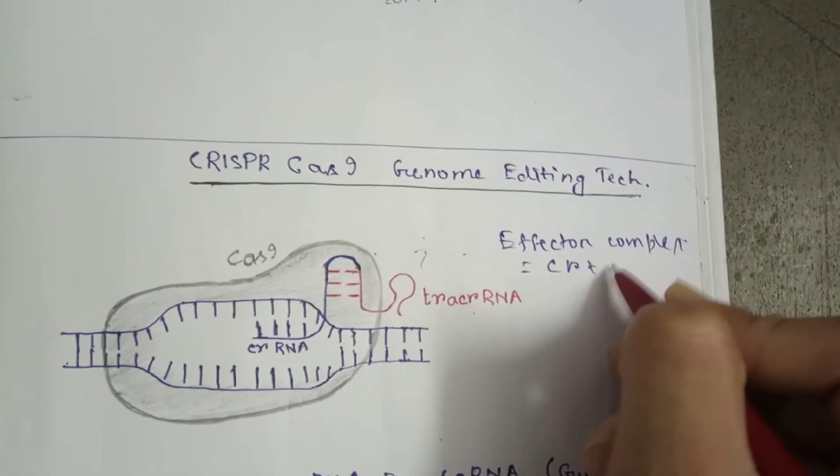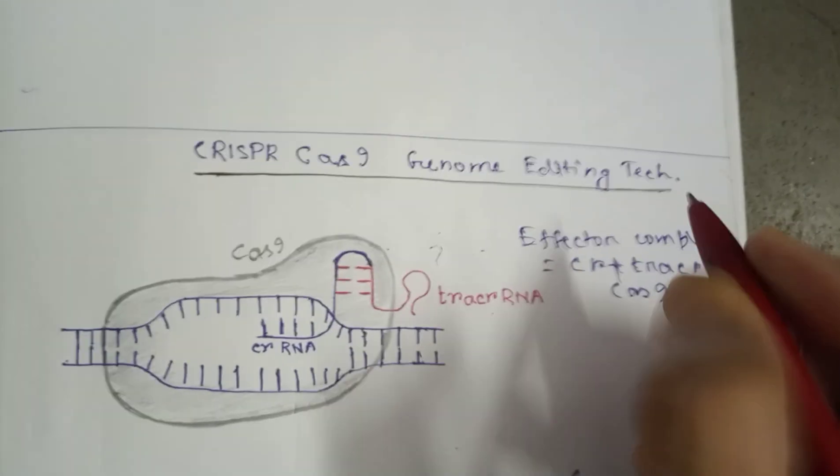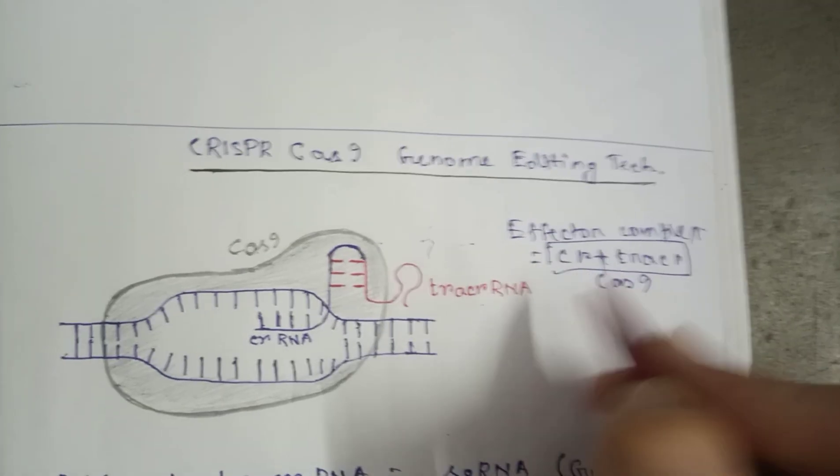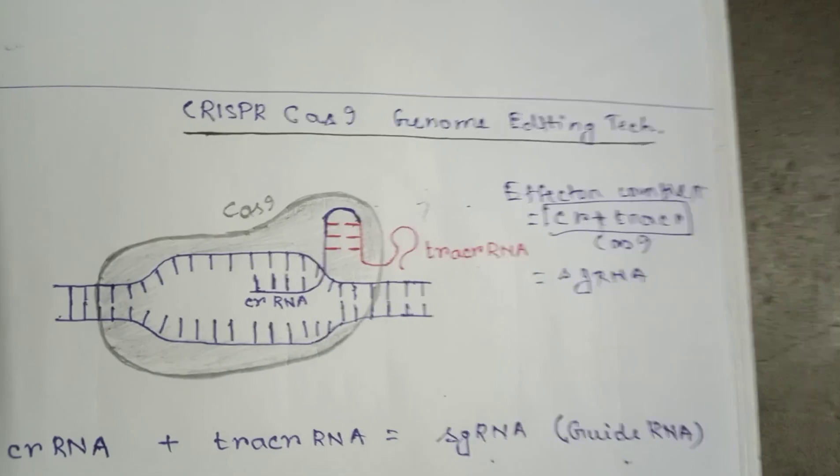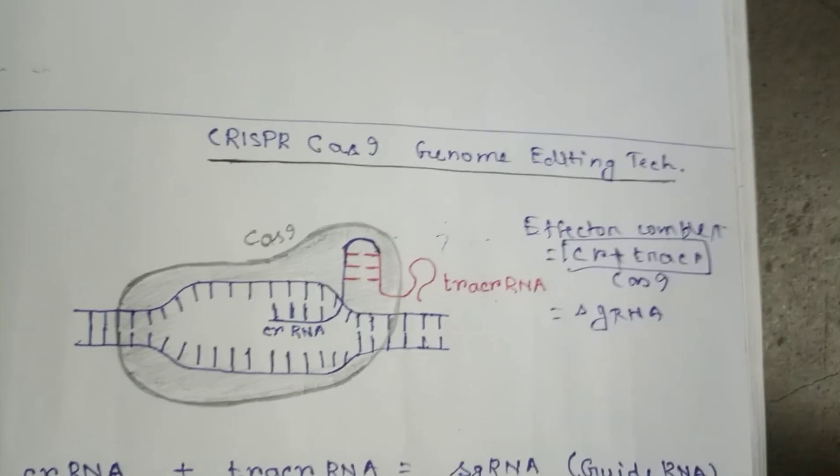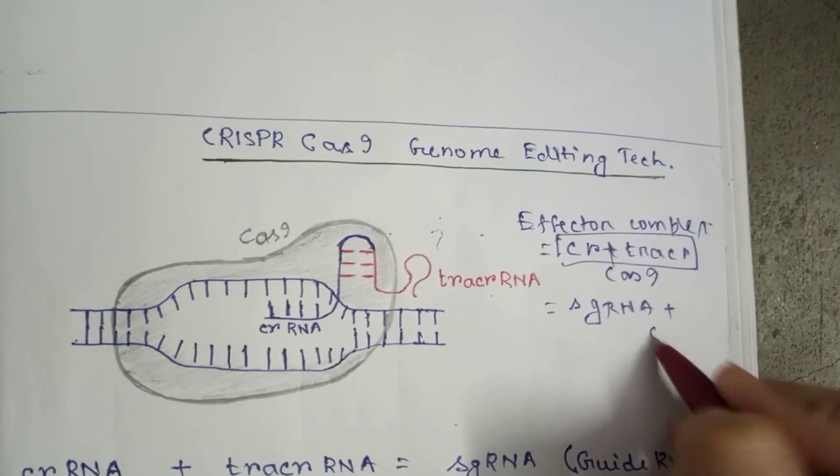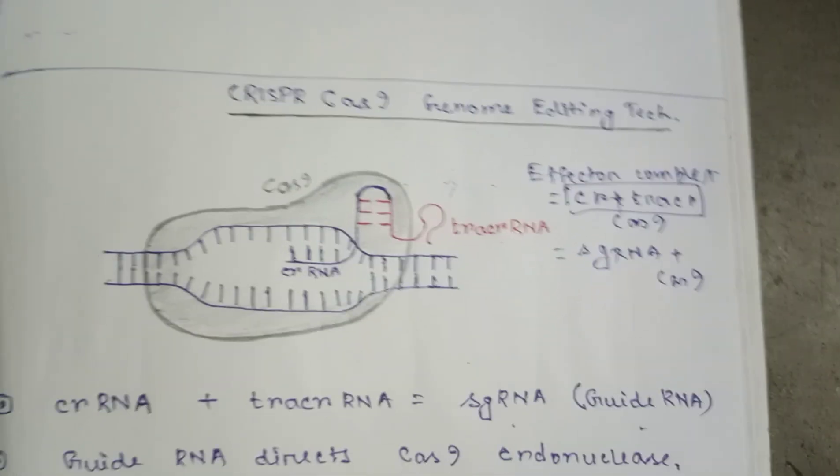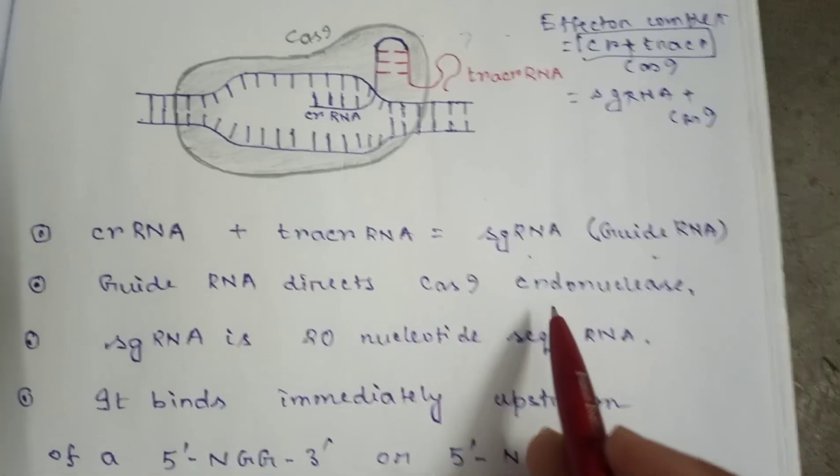The effector complex was crRNA plus tracer RNA and Cas9. Now these two is called as sgRNA or guide RNA. Guide means the name suggests that it will guide something, so it will guide the Cas9. Now the effector complex is sgRNA plus Cas9.